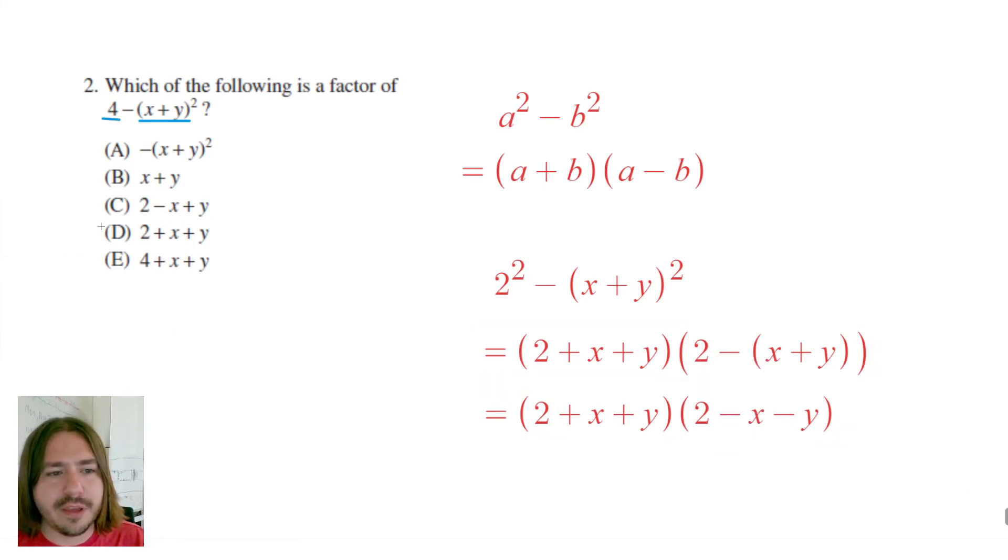So even if you messed up that second factor, like let's just say you made a mistake and you wrote 2-x+y instead of 2-x-y, you could still get this right. But you might see both of these answer choices and be confused on which one to pick.